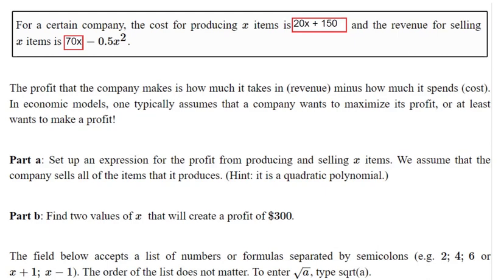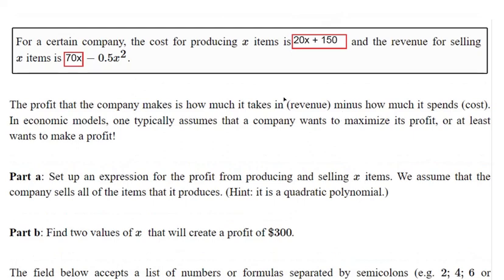Okay, so I've set up a word problem that's similar but not the same as anybody else's. Make sure I don't give away any answers, but it should be the same steps here. There's a company, the cost of producing items is 20x plus 150, and the revenue is 70x minus 0.5x squared. So part A asks you to set up an expression for the profit. Profit is just revenue subtracted by expenses. Profit is how much money you bring in subtracted by how much it costs you.